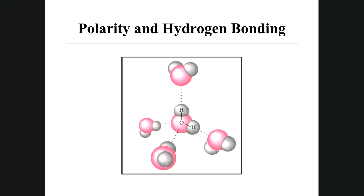A water molecule in the middle can form hydrogen bonds with four surrounding water molecules. Each water molecule has an oxygen atom, and oxygen has a very high electronegativity. The oxygen in the center is trying to form hydrogen bonds with the hydrogens of two other water molecules around it. Each water molecule has four hydrogen bonds surrounding it, which gives it some of its characteristics like its fluid properties.